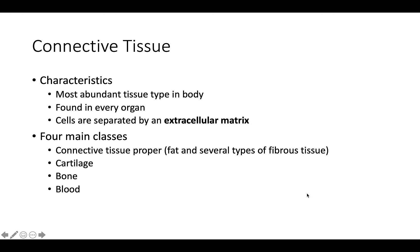Cells of the connective tissue will vary based on their different types. There are four different classes: connective tissue proper, such as fat and adipose and several types of fibrous tissue; cartilage; bone; and blood. We'll find chondroblasts in cartilage, osteoblasts in bone, stem cells in blood, and fibroblasts in the connective tissue proper.